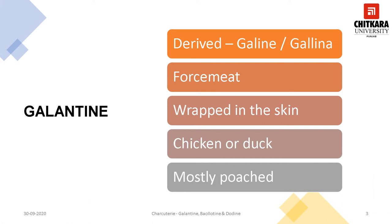Galantine, by classical definition, is deboned poultry — including rabbit and sometimes game — which is stuffed with force meat. Most food historians believe the culinary term Galantine comes from the French word 'galine', meaning chicken, and is related to the modern Spanish word for chicken, 'galina'. In French cuisine, galantine is a dish of deboned stuffed meat, most commonly poultry or fish, that is poached and served cold, coated with aspic.